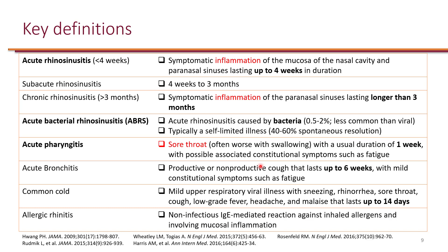Rhinosinusitis is inflammation of the paranasal sinuses. In acute sinusitis, symptoms last less than four weeks, whereas in chronic sinusitis they persist beyond three months, with sub-acute rhinosinusitis in between. Bacterial rhinosinusitis is called acute bacterial rhinosinusitis; viral is acute viral rhinosinusitis. Acute pharyngitis is primarily a sore throat lasting about one week. Acute bronchitis is a productive or non-productive cough lasting up to six weeks. The common cold is a mild upper respiratory viral illness with sneezing and rhinorrhea. Allergic rhinitis is a non-infectious immunoglobulin-mediated reaction against inhaled allergens.